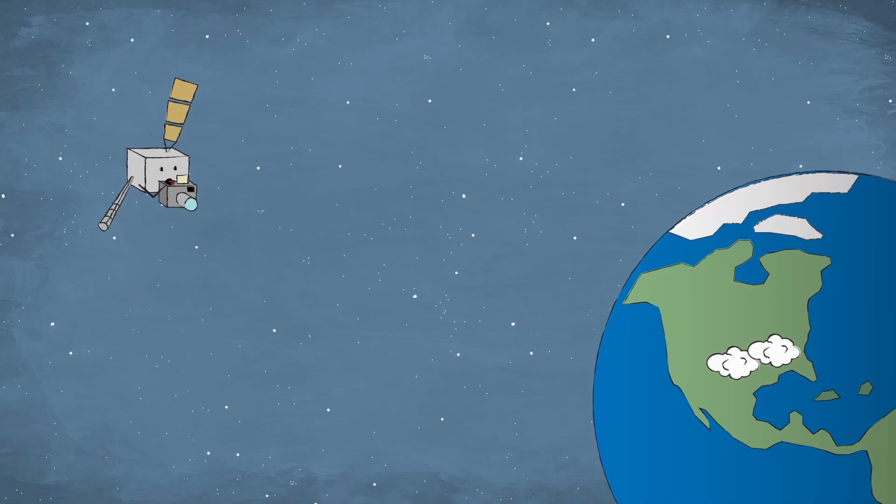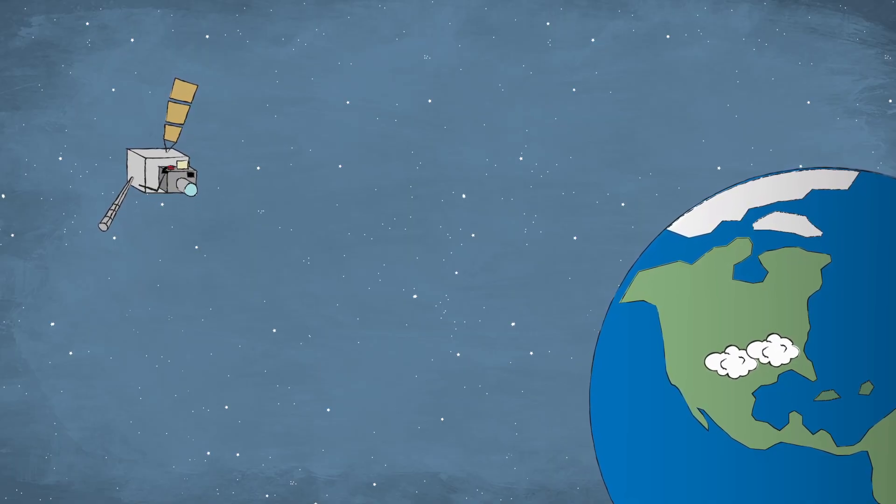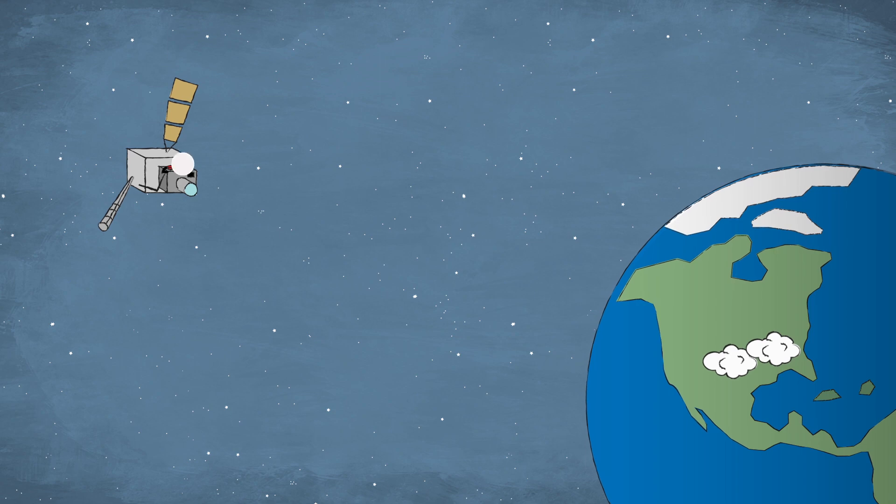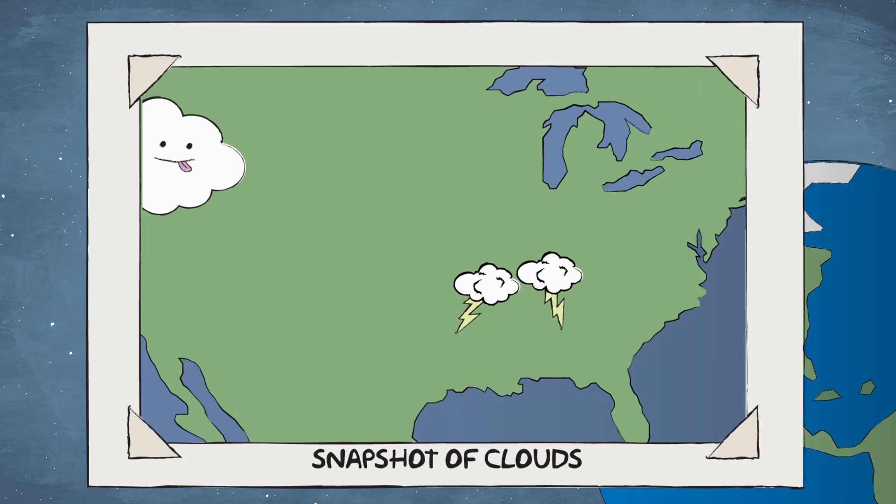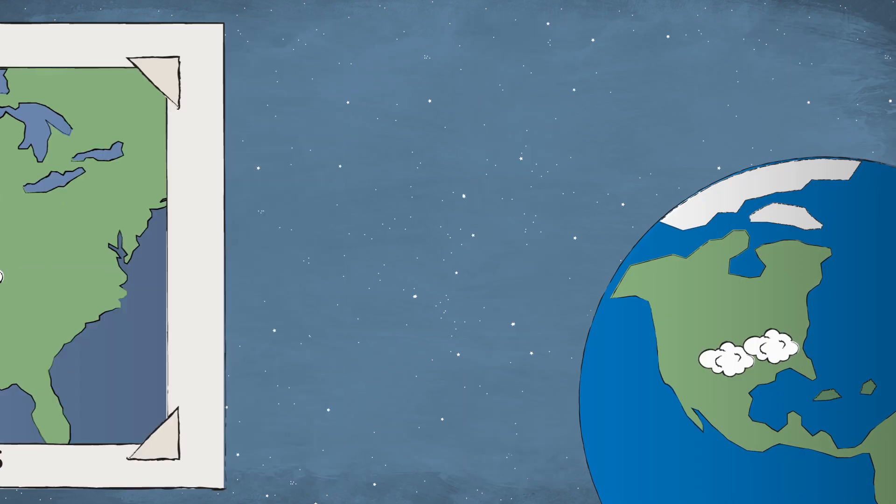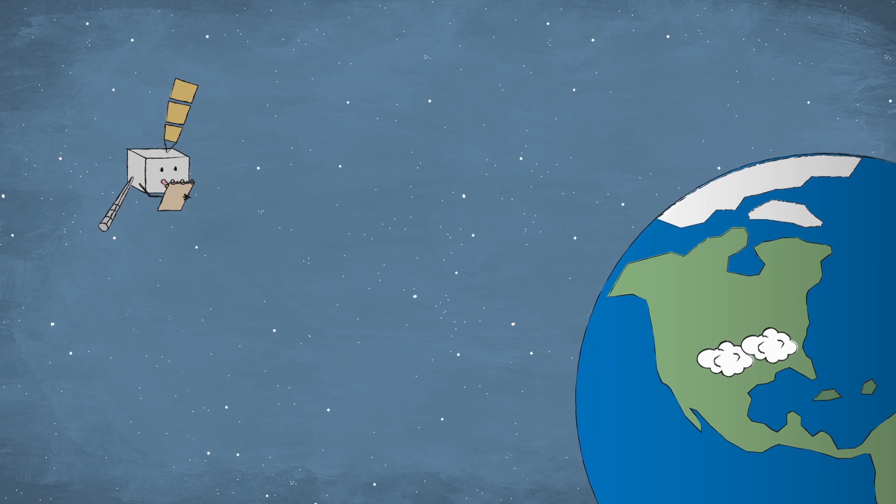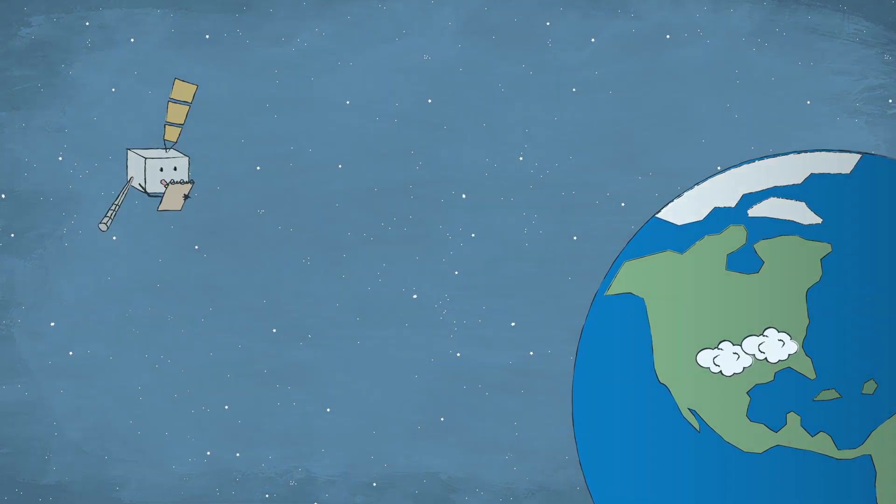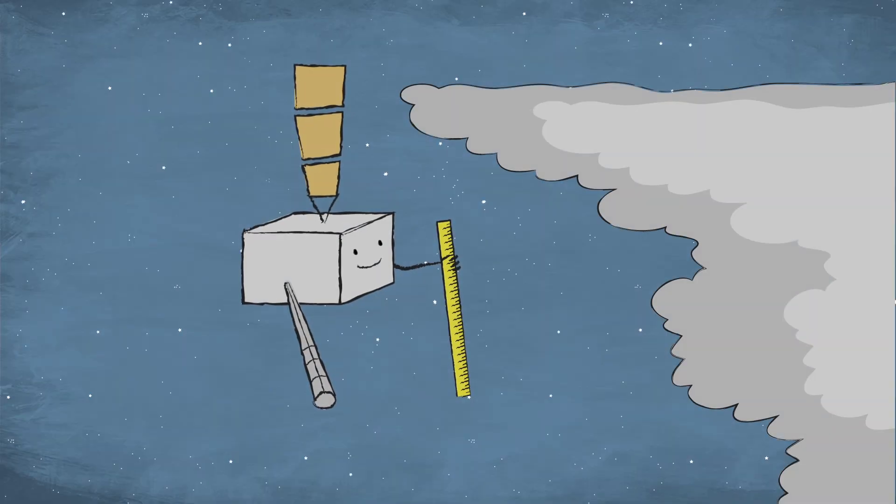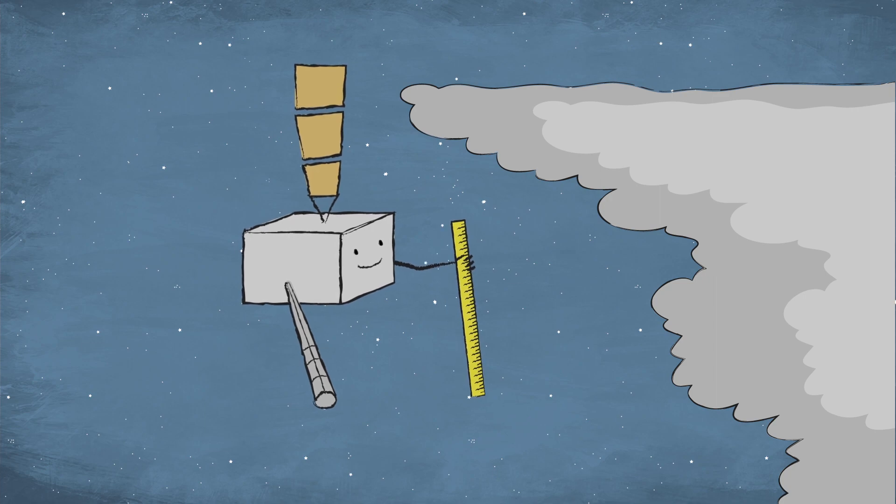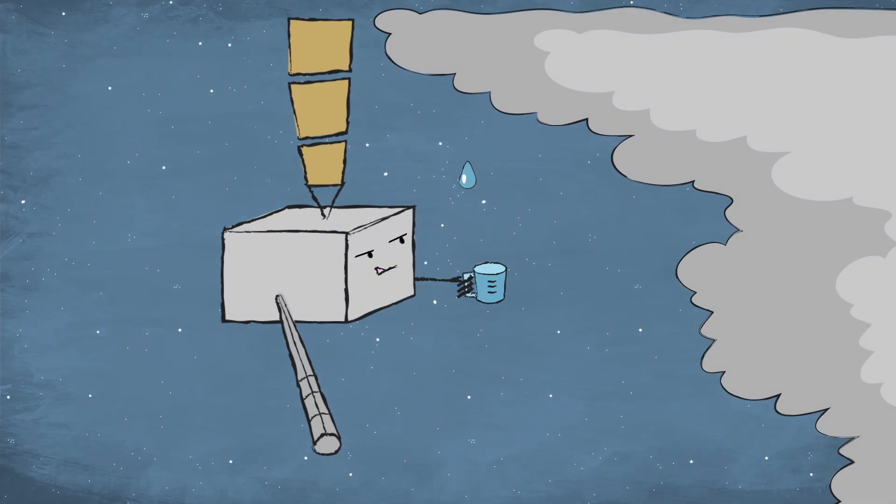I point my special camera at the Earth and take pictures of the clouds I see below. My pictures show where the clouds are, but I also take lots of other notes about the clouds. For example, how high they reach into the atmosphere, how much rain they might cause, and when a severe storm may be forming.